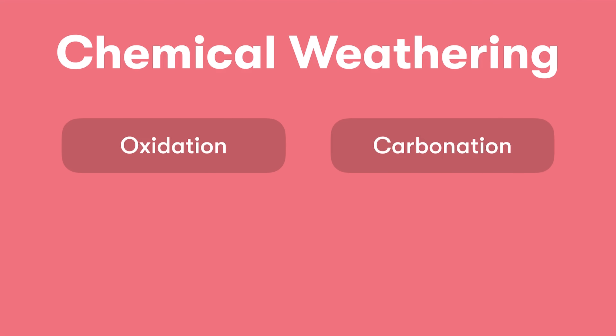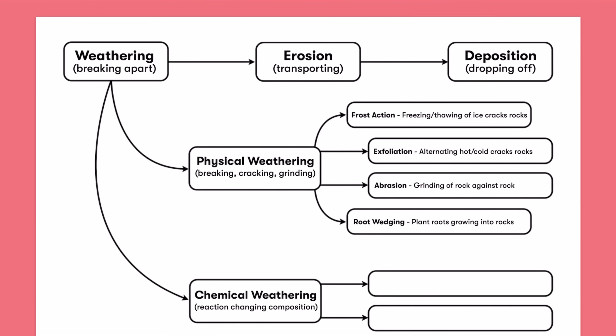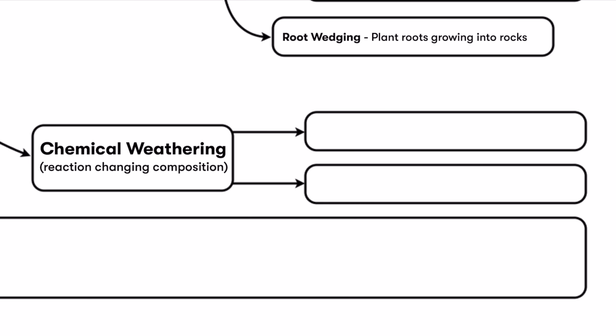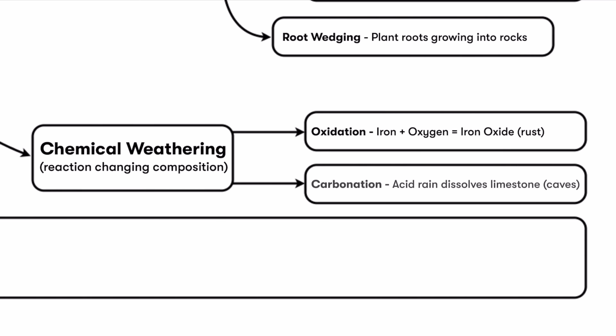To summarize our two types of chemical weathering on the flowchart: oxidation is when iron and oxygen produce iron oxide or rust; and carbonation is when acidic water dissolves limestone, giving us caves.